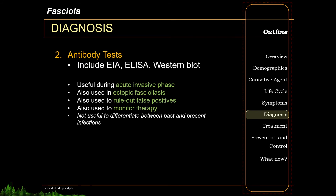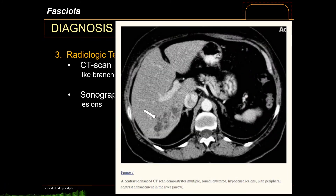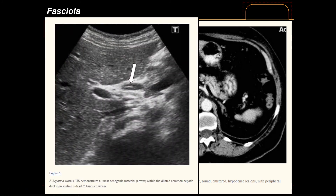Antibody tests can also be used to diagnose Fasciola infection and are primarily useful during the acute invasive phase, when there is significant immune reaction. Antibody tests can also be used in ectopic fascioliasis, to rule out false positives, and to diagnose halzoun and marara. Radiologic tests such as CT scan and sonography can also help — a CT scan may demonstrate multiple round clustered hypodense regions, while ultrasound can show linear echogenic material within the common hepatic duct, indicating adult Fasciola worms.